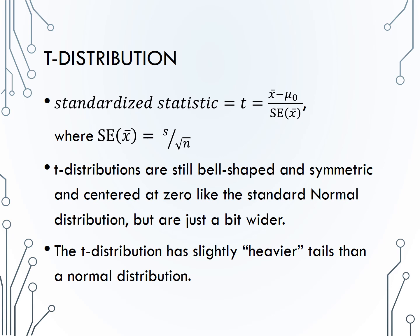Clearly, means will vary less than individual observations, and we see this in the formula, as the spread of means is actually found by taking the spread of individuals and dividing by the square root of n. So the larger the sample size, the less the sampling variability of means from different samples, which is an idea we have discussed before.